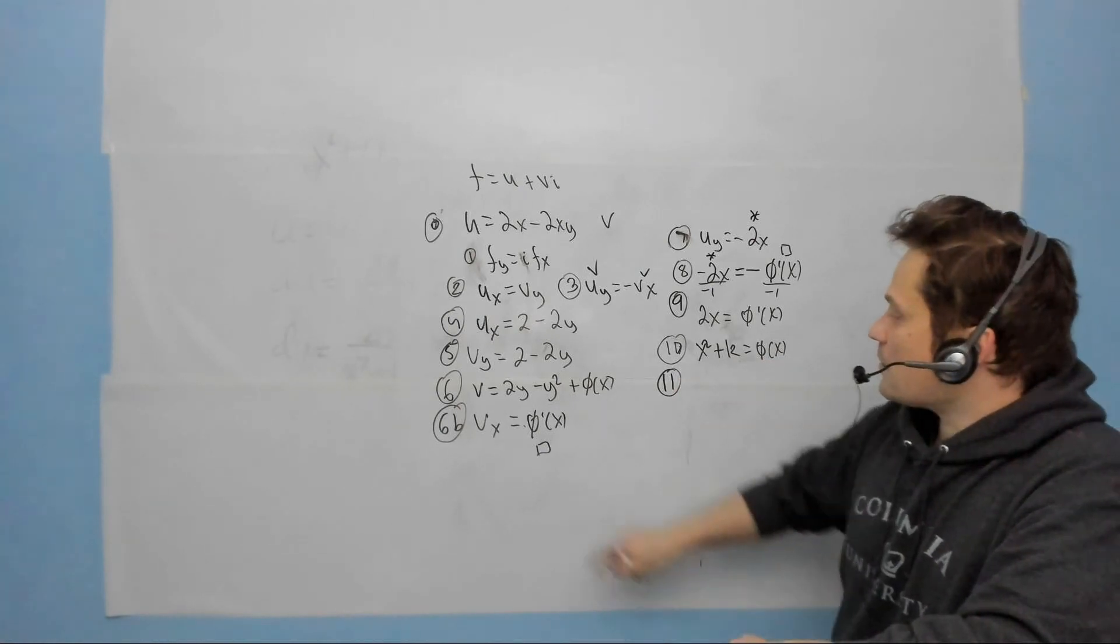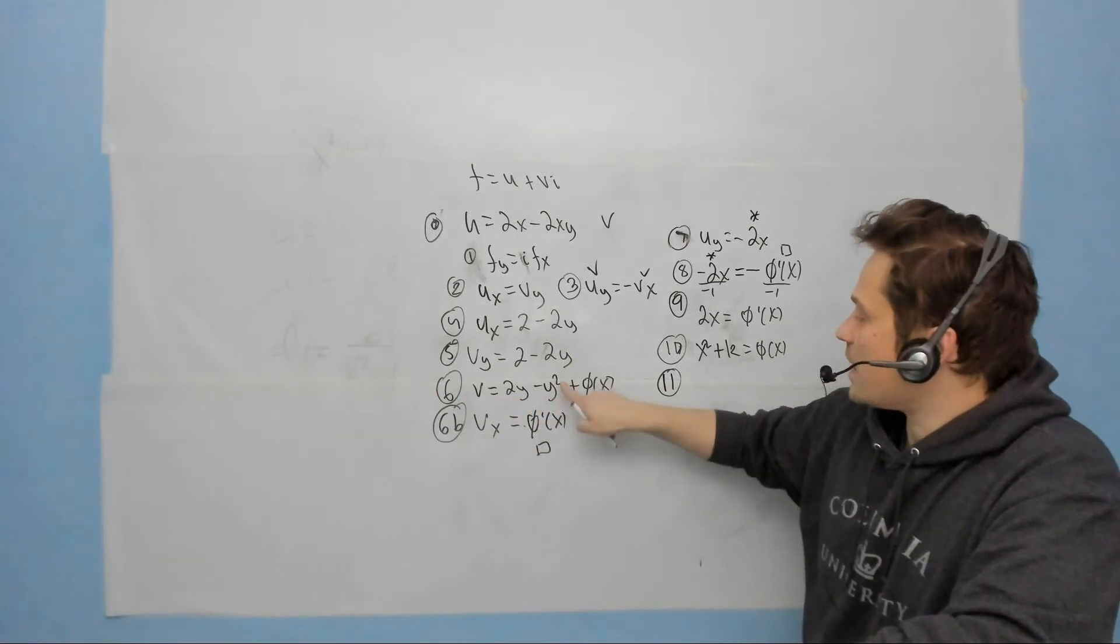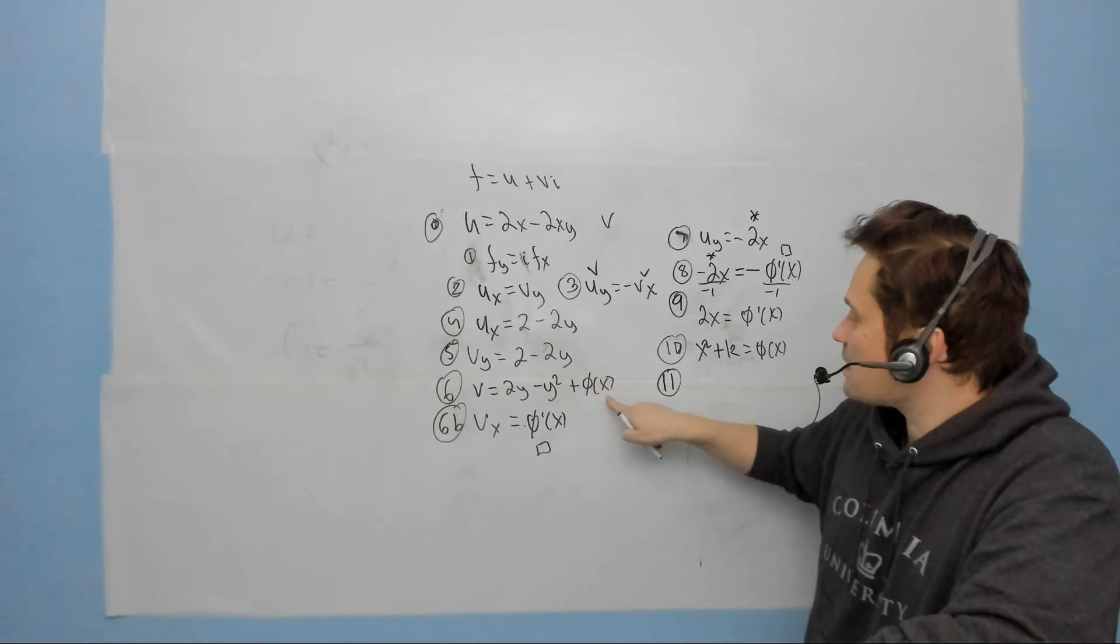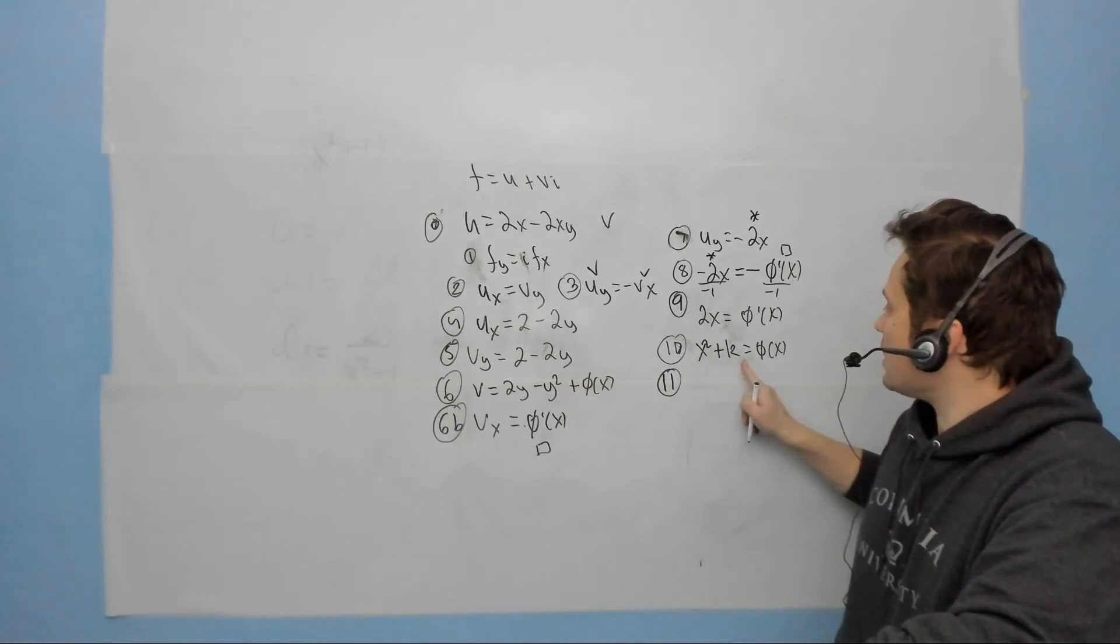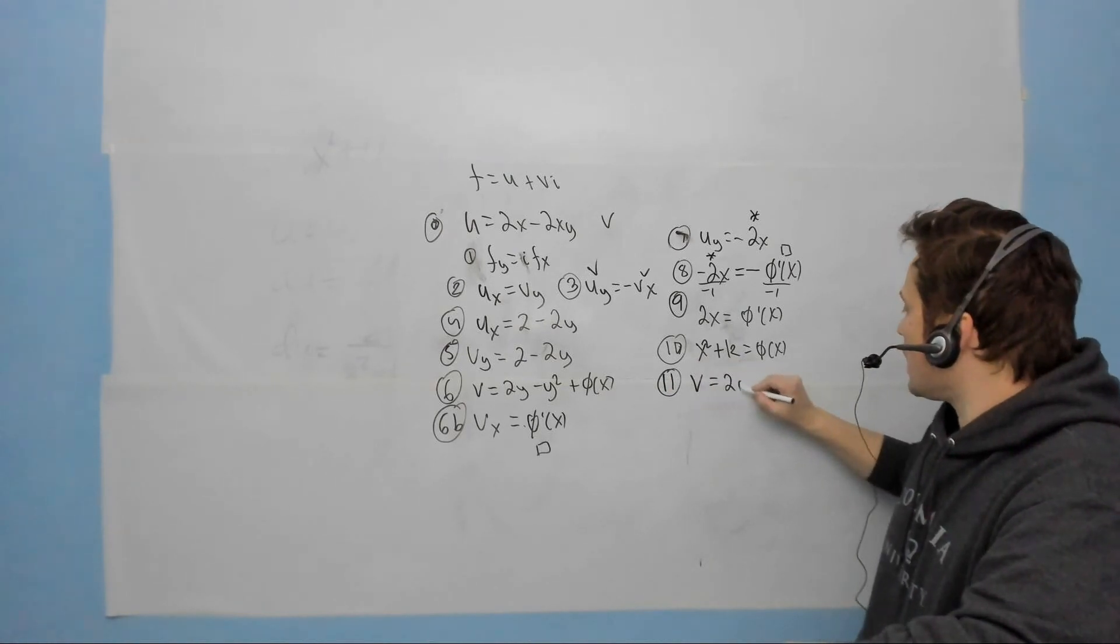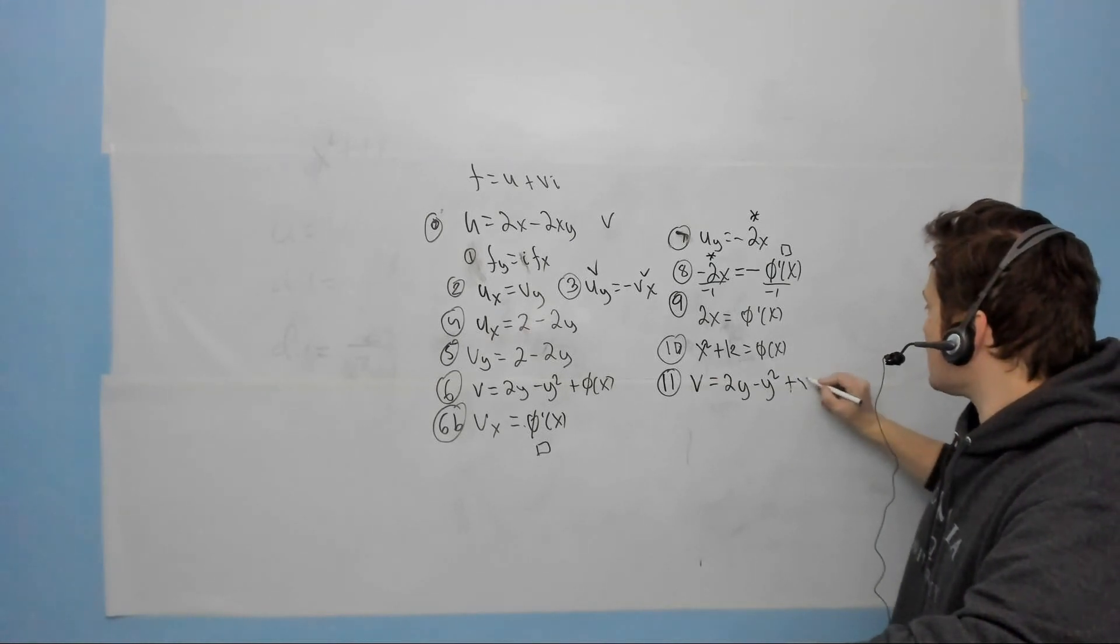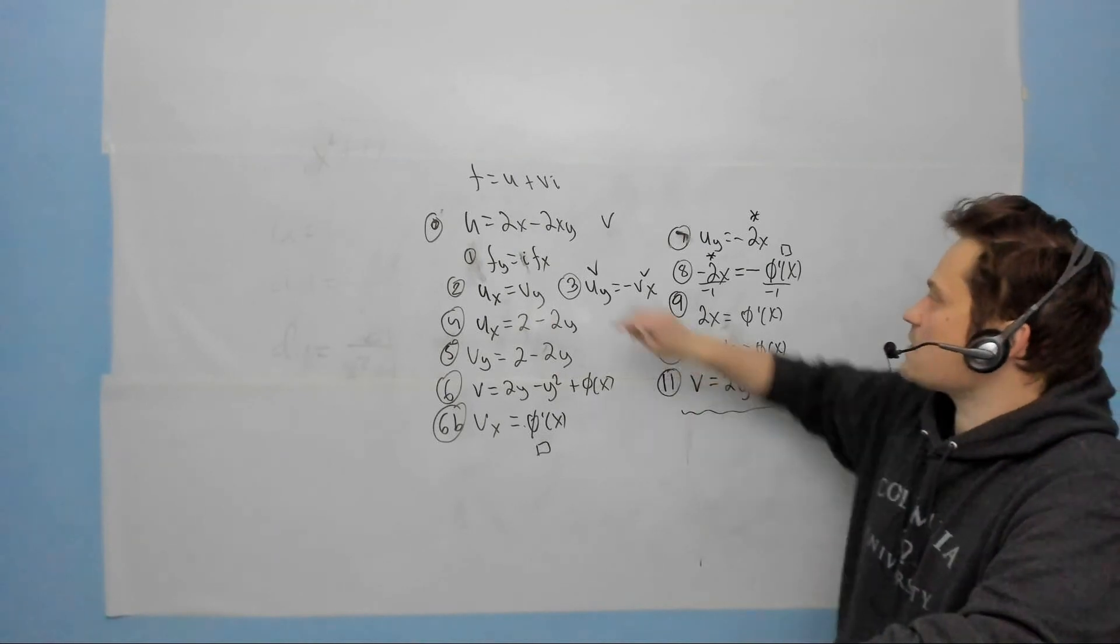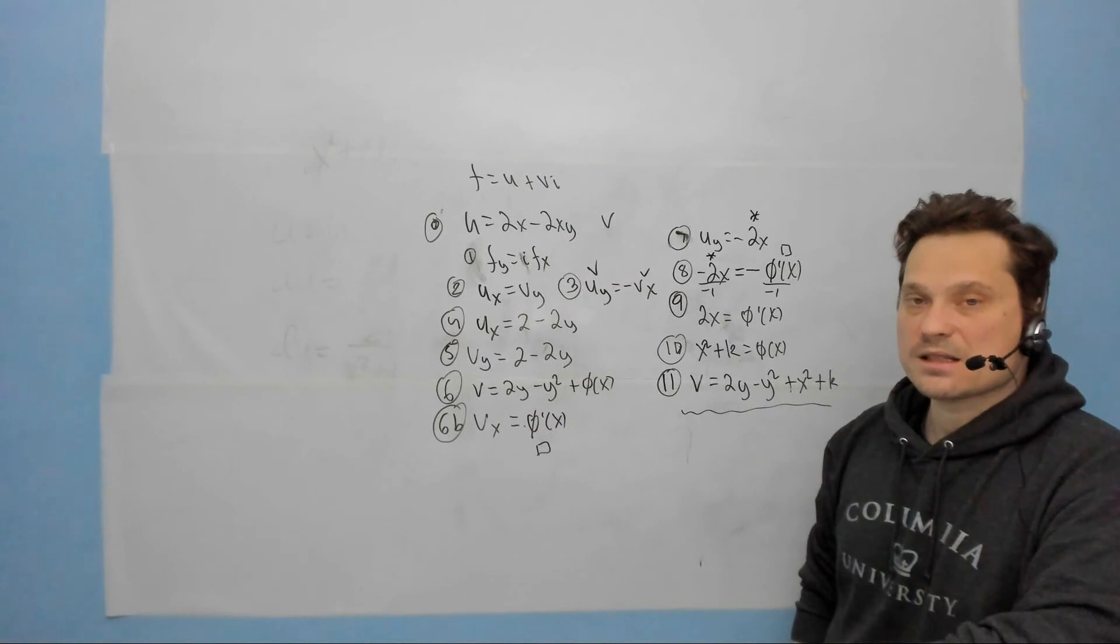Remember that what I'm going to do is take step 6, which is 2y minus y squared plus φ of x, and in step 6, replace φ of x with the expression from the left side of step 10. So v equals 2y minus y squared plus x squared plus k. And this is the harmonic conjugate of this function u back at step 0 that we wrote down. And that's it.